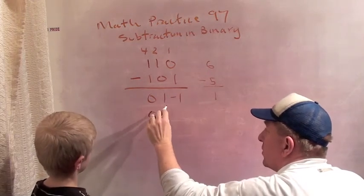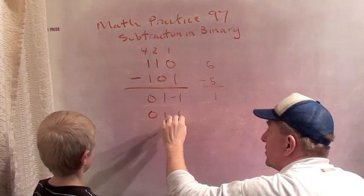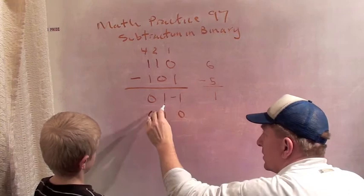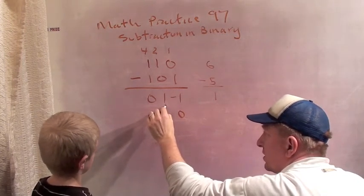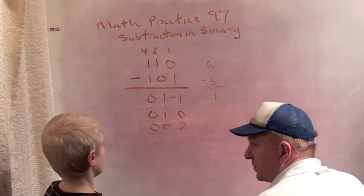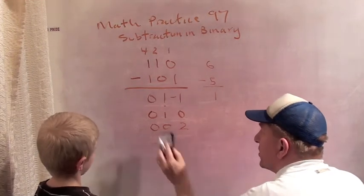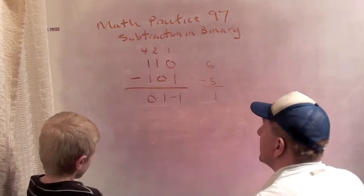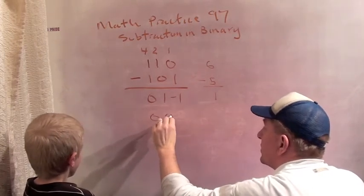This 010, in other words, this one here changes into a 002. Okay? So 010 becomes 002. And this minus one becomes a 00 minus 1.